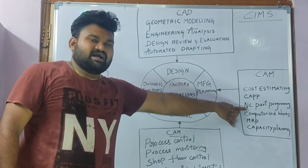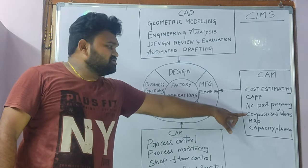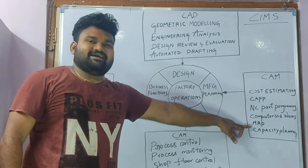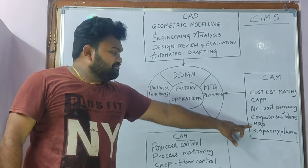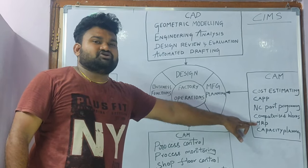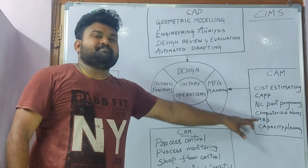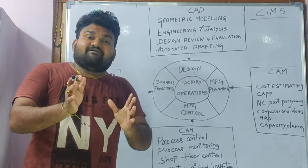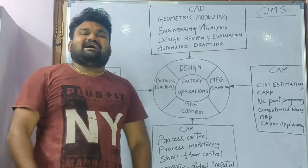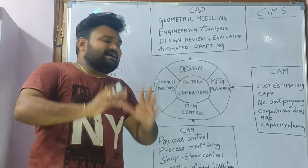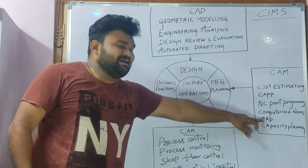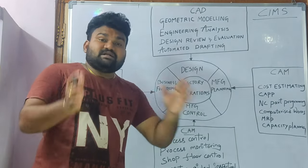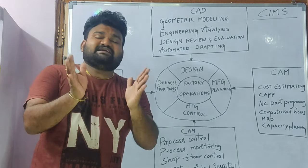You will have to do this through the computer. You will have to do this with manufacturing resource planning. Material resource planning is to do the manufacturing resource planning — how much material is required. How much capacity is needed to do this?